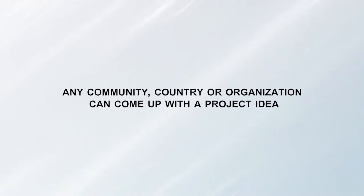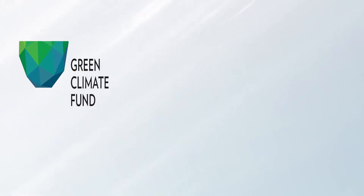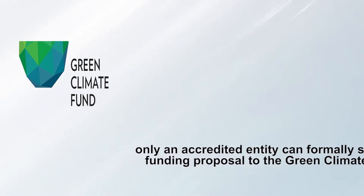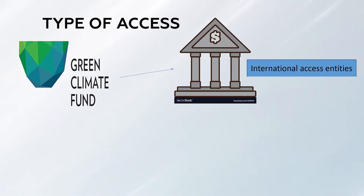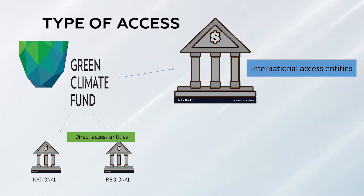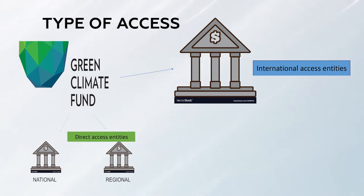Any community, country, or organization can come up with a project idea, but it has to go through the Green Climate Fund via an accredited entity. We can look at funding proposals depending on the type of access — you may already identify which entities exist in your region. For example, in Asia we have the Asian Development Bank as a regional direct access entity, and some countries have national development banks also accredited as direct access entities. Depending on whether proposals are submitted by a direct access entity or an international access entity, the funding proposal differs.